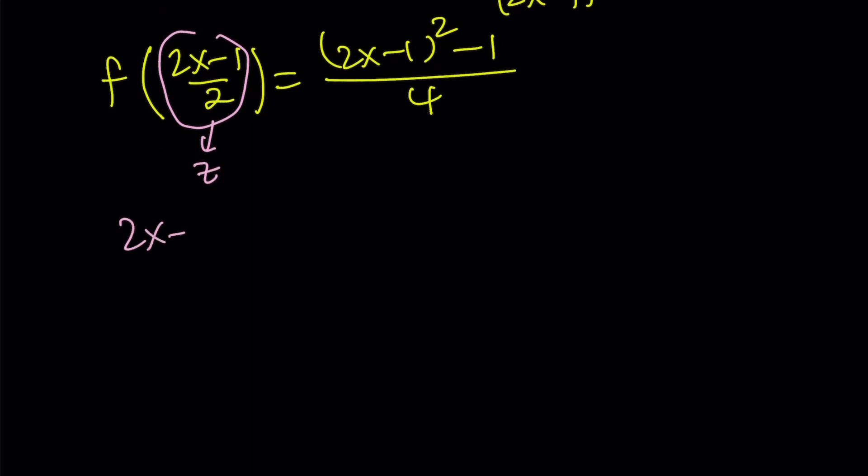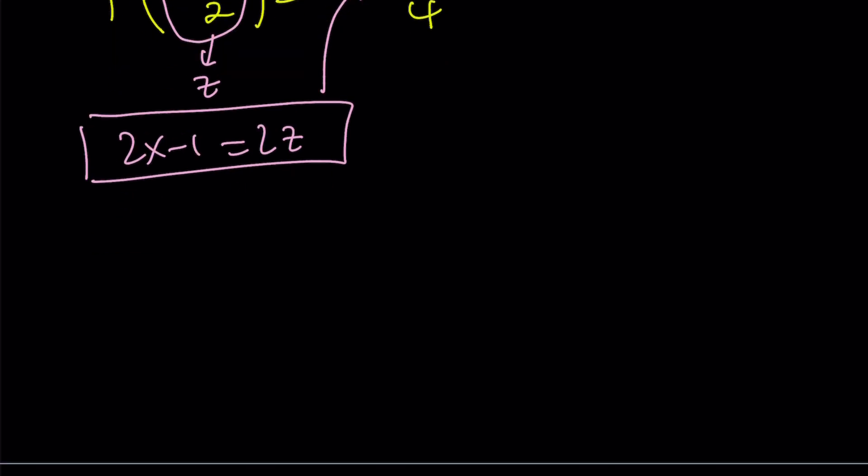So 2x minus 1 becomes 2z. Now, you don't have to find x here because we have 2x minus 1 on the right-hand side. And you can directly substitute that, getting f of z equals 2z quantity squared minus 1 over 4. And that is 4z squared minus 1 over 4, and that can be written as z squared minus 1 fourth.